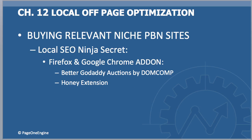Here's a local SEO ninja secret: if you're using Firefox or Google Chrome, go to the add-on or extension part of the browser and download 'Better GoDaddy Auctions' by dom.com. It gives you analytics for the domains you're looking for in GoDaddy, so you can type in a niche, get all the domains, and see if one stands out with a high PA, DA, or PR. If you see a PR3 domain for $6 or $7, throw it into Majestic and see if it's worth buying. Also, the Honey extension runs coupons and promo codes automatically on GoDaddy's checkout page to find you the best deal.